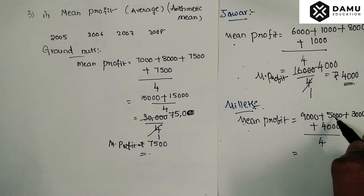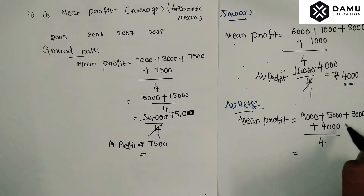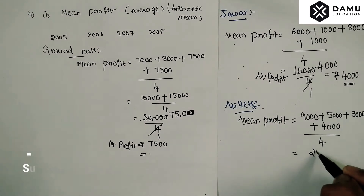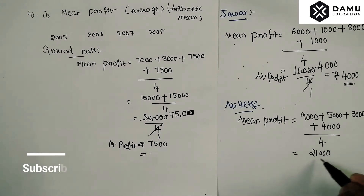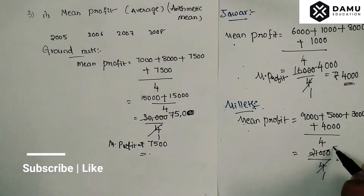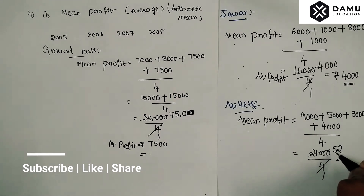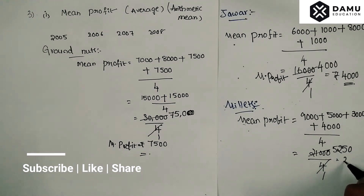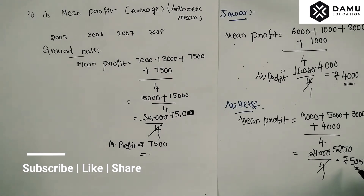Adding: nine plus five is fourteen, fourteen plus three is seventeen, seventeen plus four is twenty-one. So twenty-one thousand divided by four equals five thousand two hundred and fifty rupees — that is the mean profit for millets.